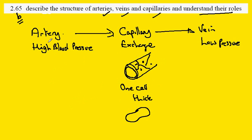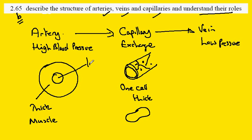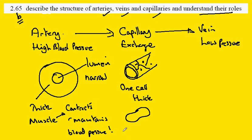Contrast that with the artery, where the wall would be fairly thick and contain muscle. The lumen which carries the blood would be narrow and the muscle contracts and maintains the blood pressure all the way to the organ.